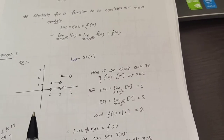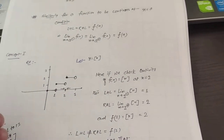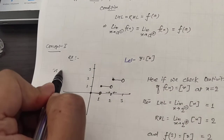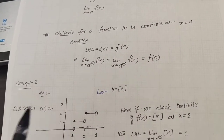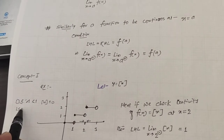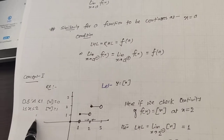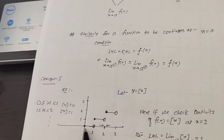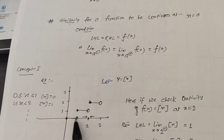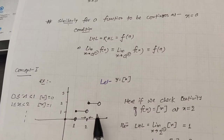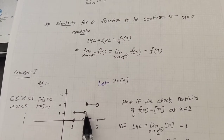Let us check this concept using y equals to the greatest integer function of x. From the graph, whenever x is in [0, 1), the greatest integer value is 0. When x is in [1, 2), the greatest integer value is 1, and so on. So when x varies from 0 to 1, its value is 0, and when x varies from 1 to 2, its value is 1. At integer points the graph has an open circle, meaning there is no value there.